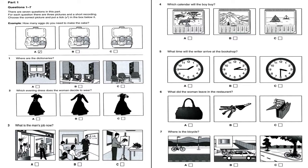Four. Which calendar will the boy buy? Mum asked me to buy her a calendar. Shall I get this one with pictures of mountains, or this one with boats on it? She loves sailing, so get that one. I like that one with wild animals, but I don't suppose Mum would. And you can't get the one with mountains, because she had that last year. Yes, I know. I'll get the one you suggested then.